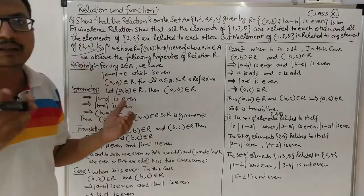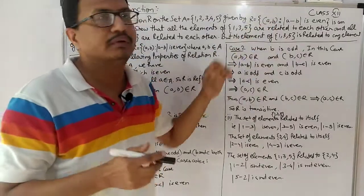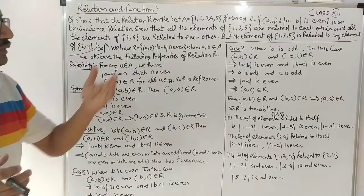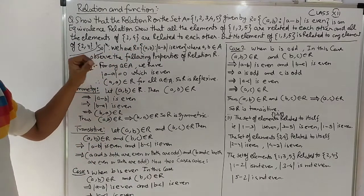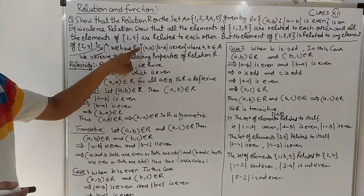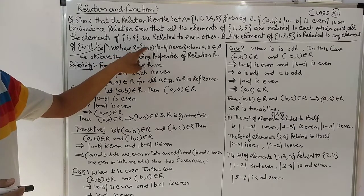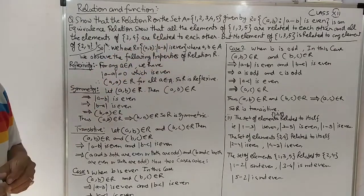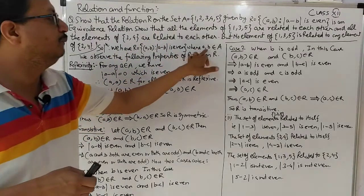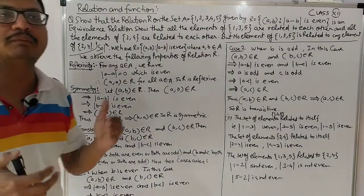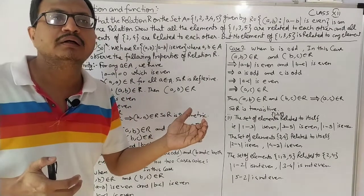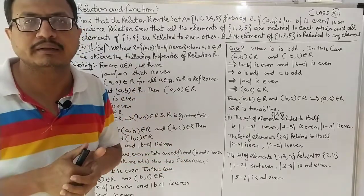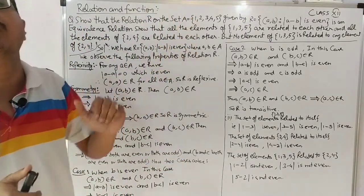अब देखते हैं कि इस relation को हम लोग reflexive, symmetric और transitive किस तरीके से show करते हैं। We have R = {(a, b) : |a - b| is even}, where a, b belongs to A। जब आप A cross A करते हैं तो जो भी elements a और b के आएंगे वो set A को ही belong करेंगे।